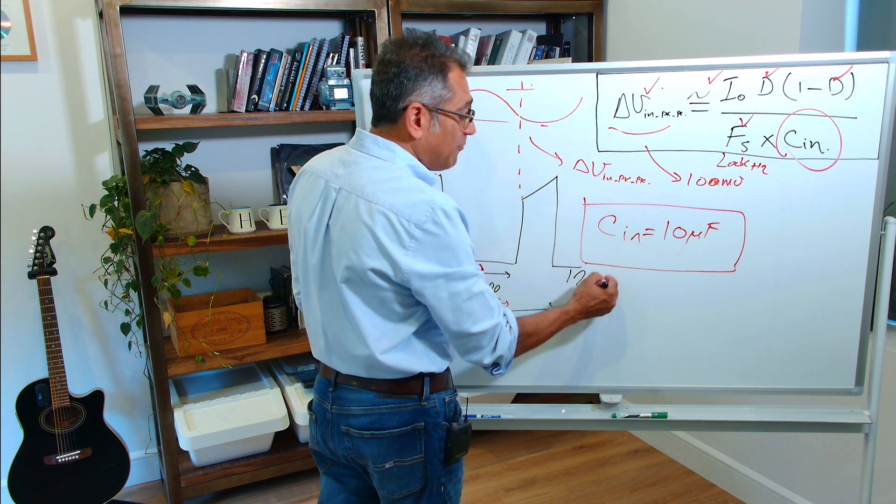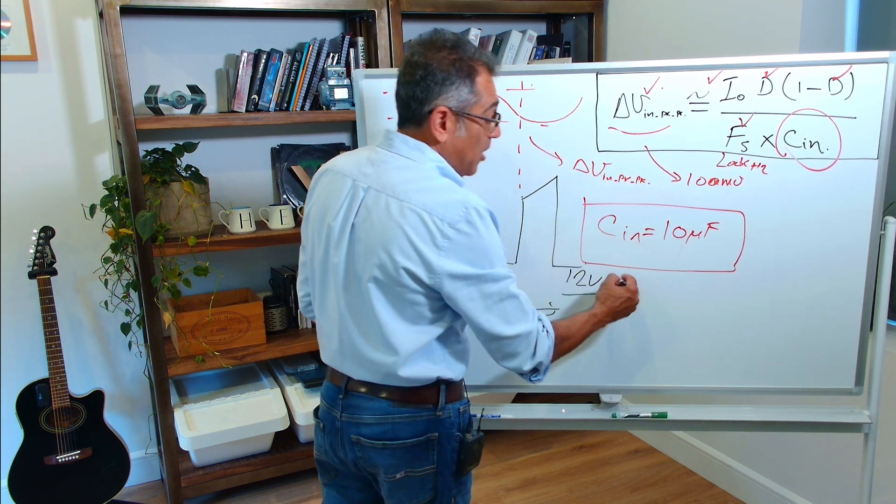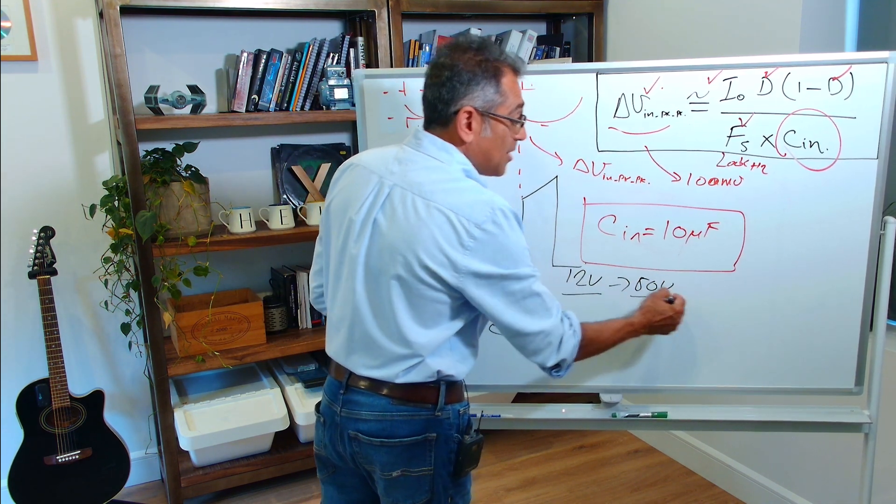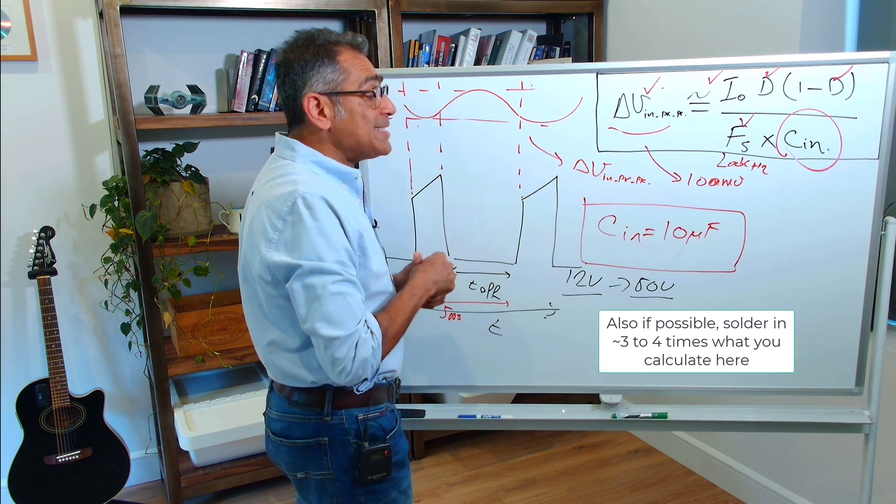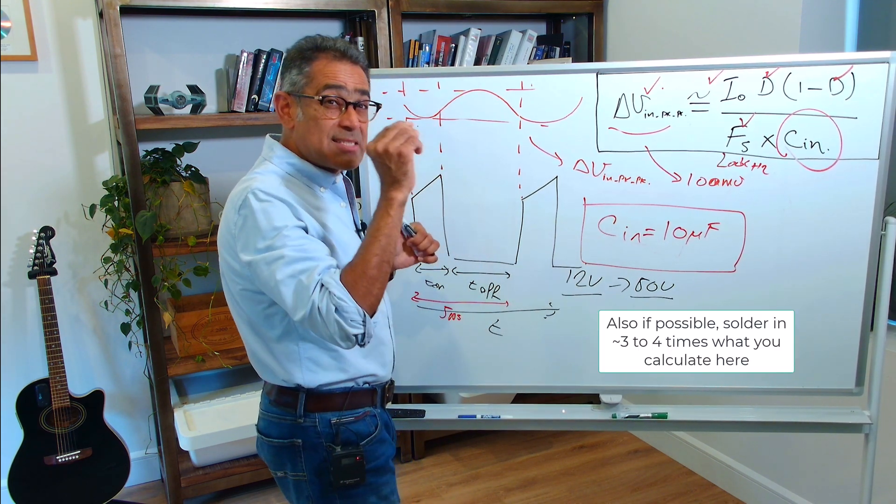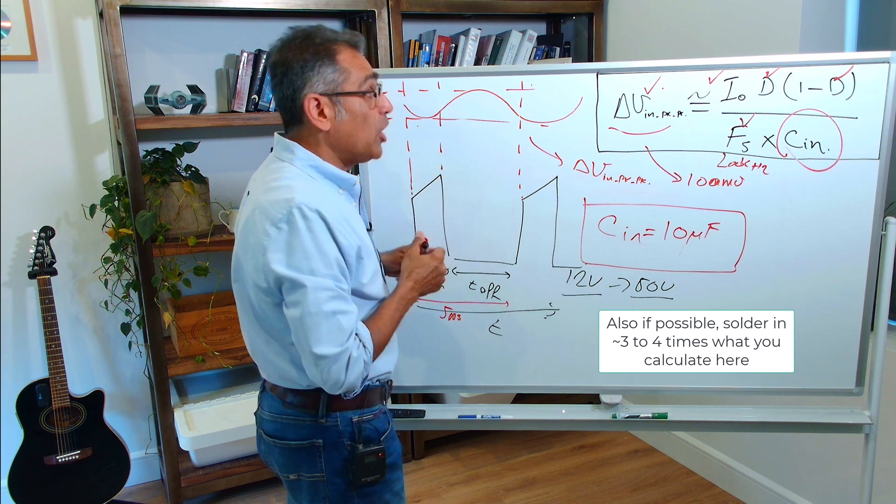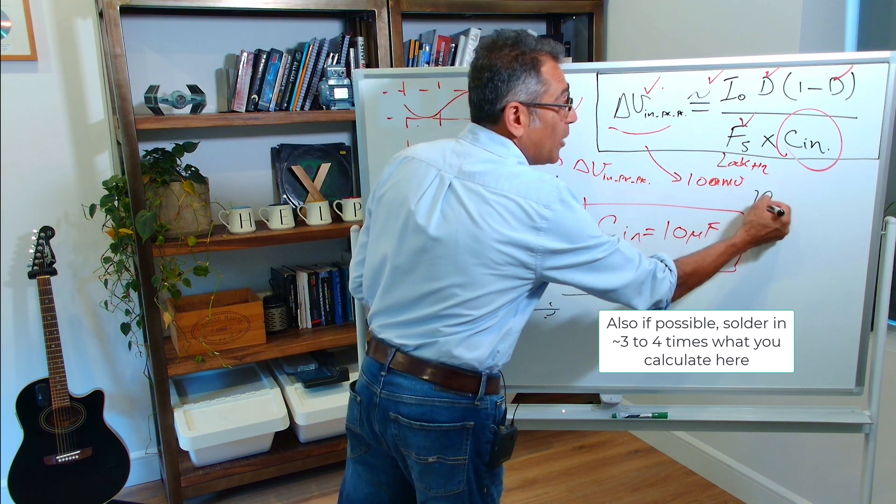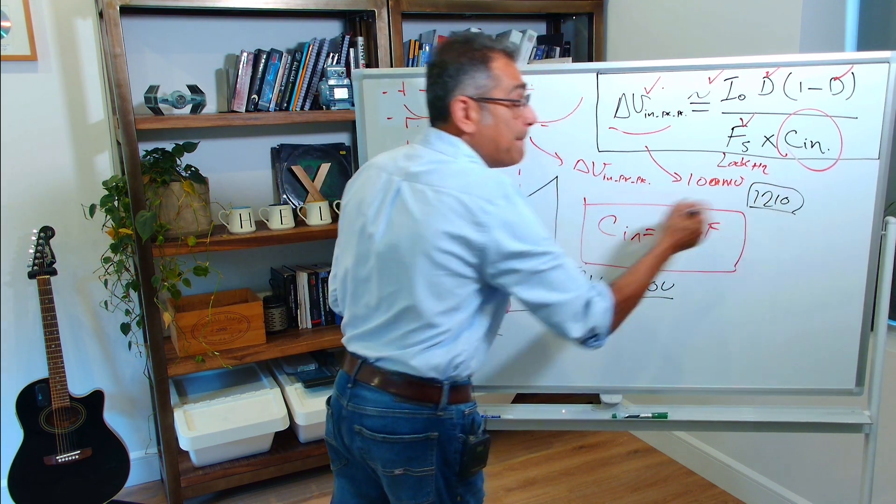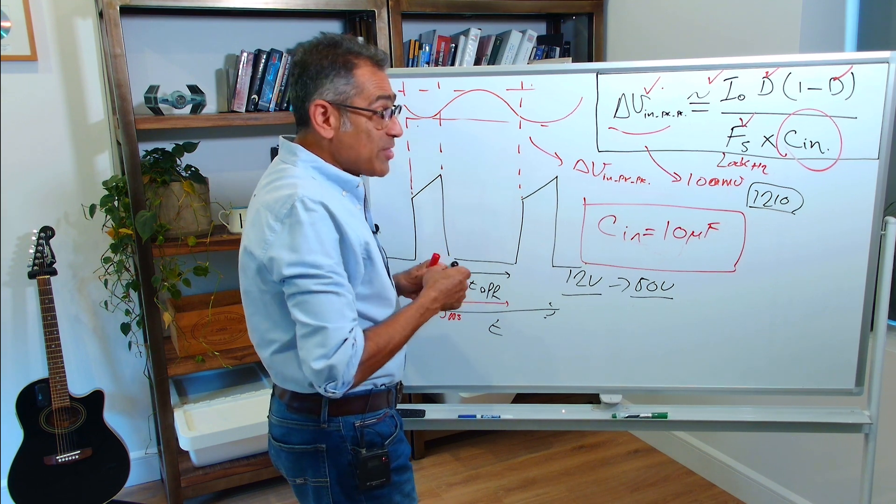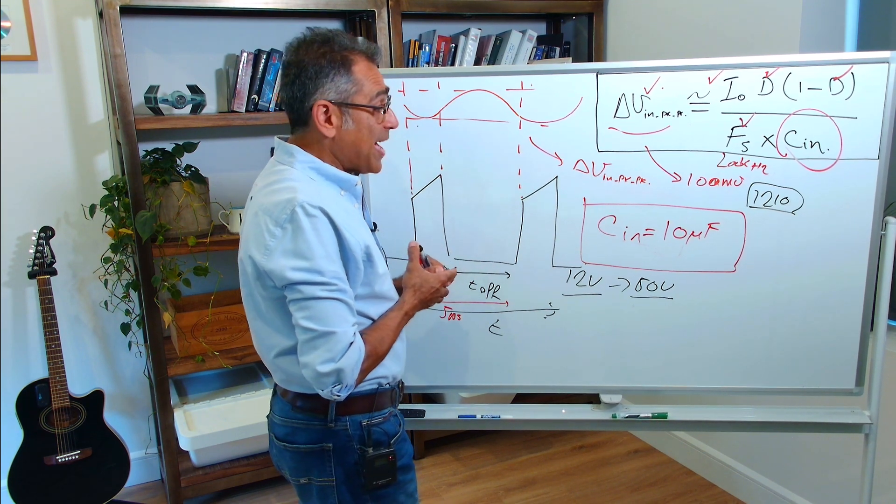For example, if you're doing a 12 volt power supply, then buy a 50 volt ceramic capacitor. And also, DC bias gets worse as the size of the capacitor gets smaller. So, try to buy a 1210, or maybe even bigger package, so that DC bias loss is not too bad.